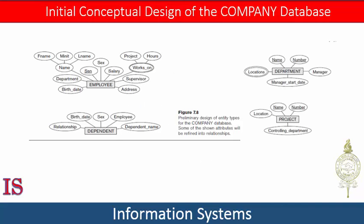A database usually contains groups of entities that are similar. For example, a company employing hundreds of employees may want to store similar information concerning each of those employees. These employee entities share the same attributes, but each entity has its own value or values for each attribute. An entity type contains a collection or set of entities that have the same attributes — for example, multiple students in the student entity, or multiple courses in the course entity.